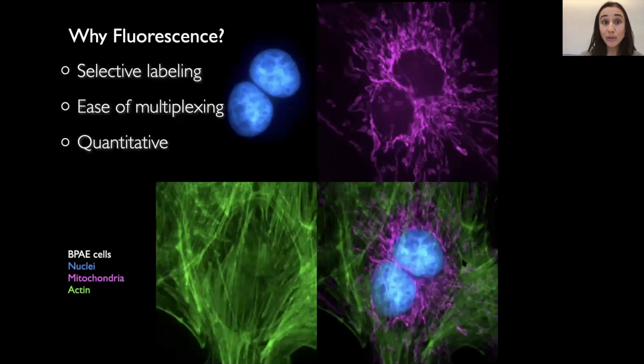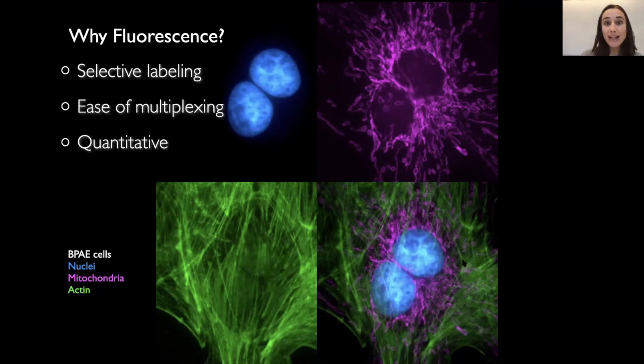And that is not all. We can also do selective labeling, which means that we can selectively label different structures in your sample and look at them at the same time, which is what it stands for, multiplexing. Because we can exploit different colors along the visible spectrum and specifically label different fluorophores to different structures. And also we can retrieve quantification, meaningful data, with some care, of course, and control, loads of controls. But this is possible and can be very useful in bioimaging research.